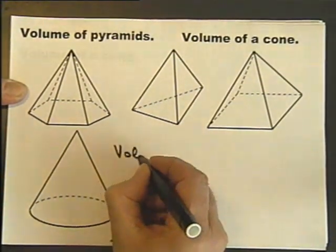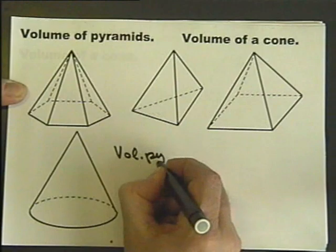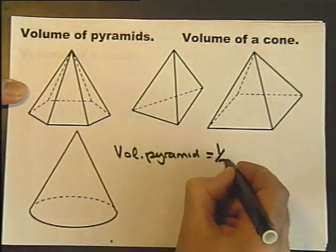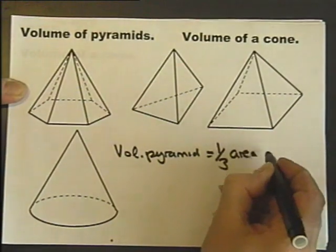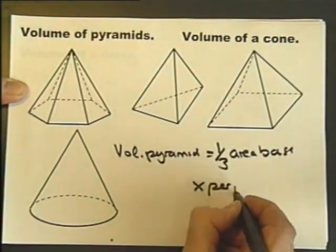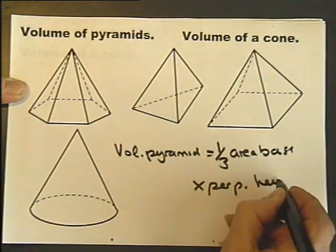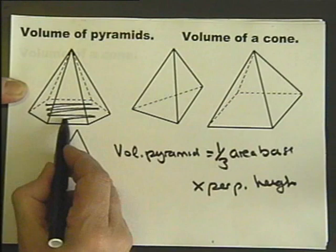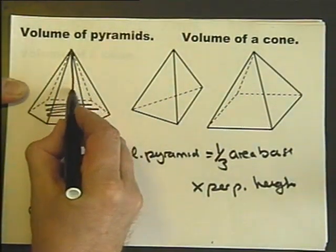The volume of any pyramid is a third, the area of the base, multiplied by the perpendicular height. So if you have the area of the base, you third that, multiplied by the perpendicular height.